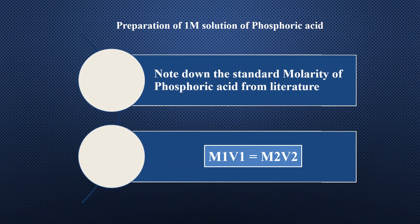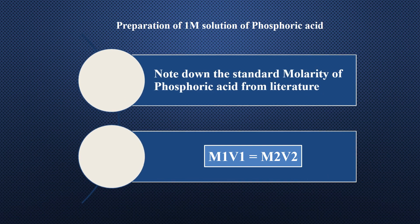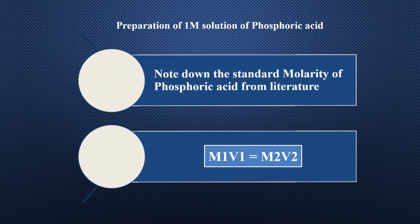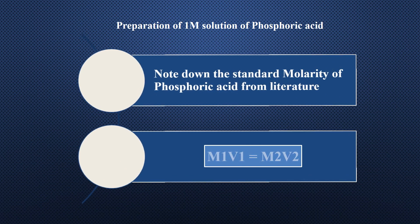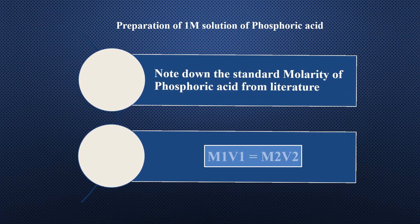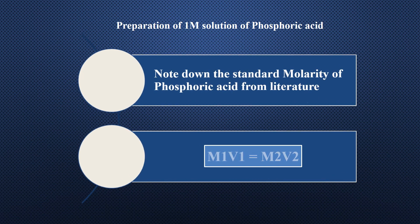The first step is to note down the standard molarity of phosphoric acid from literature. As the standard molarity of every acid is present in literature, the second step is to use the dilution formula to find out the required volume of phosphoric acid. M1 is the standard molarity of phosphoric acid, which we can take from literature according to the concentration written on the acid's bottle.